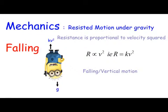Welcome to Math with Bob. Today we're looking at resistive motion under gravity where the resistance is proportional to the velocity squared. This is under the umbrella topic mechanics, moving bodies and the forces on them.